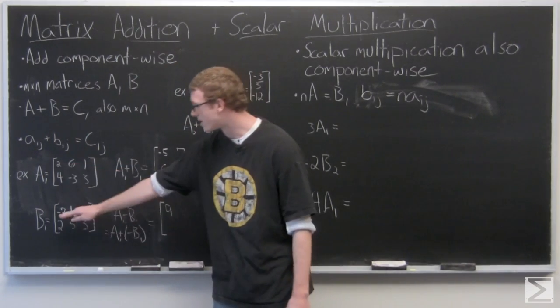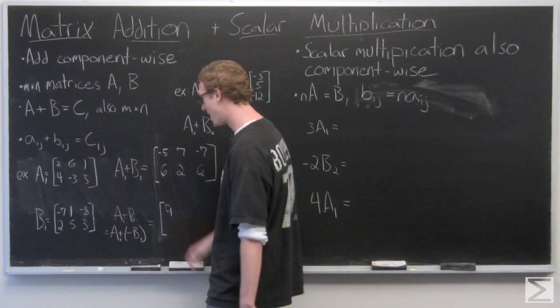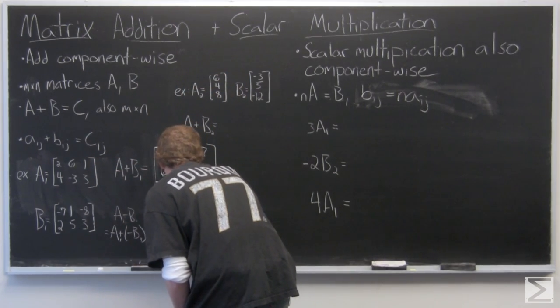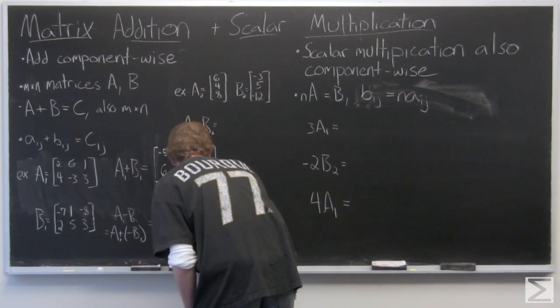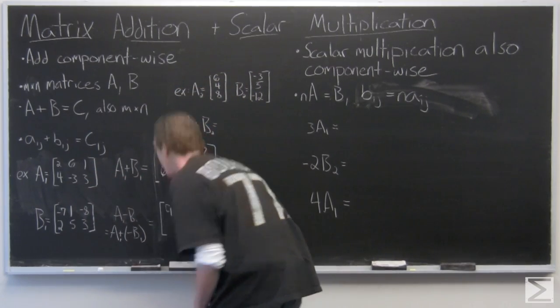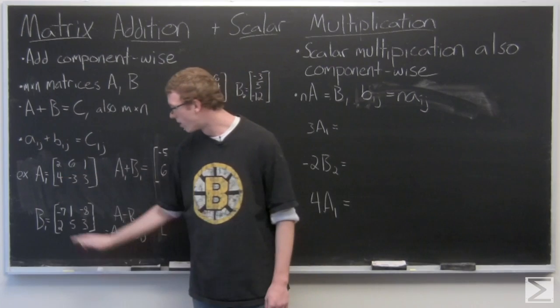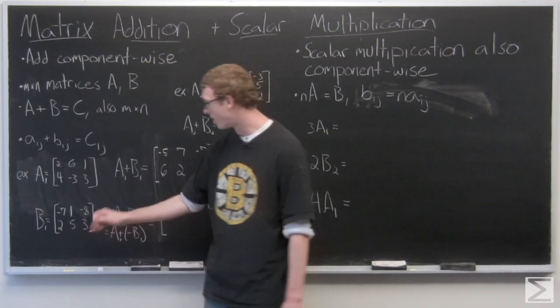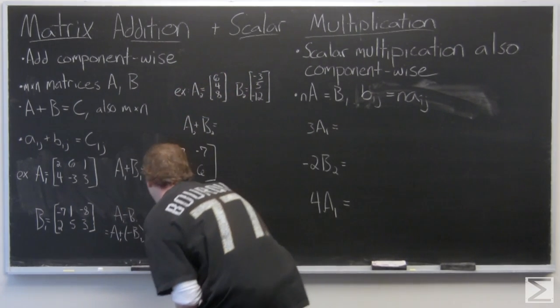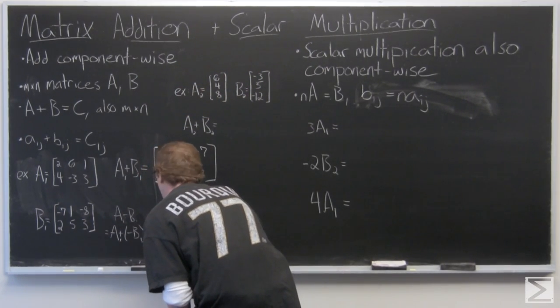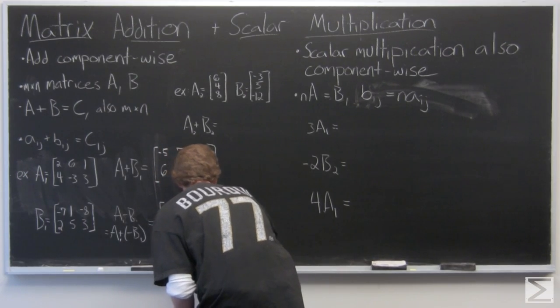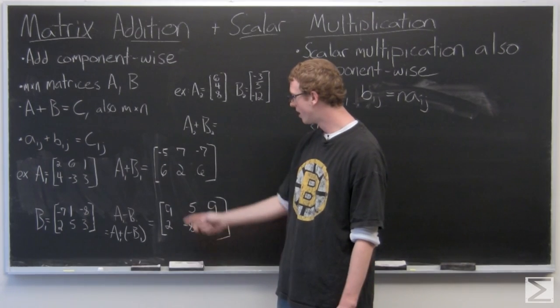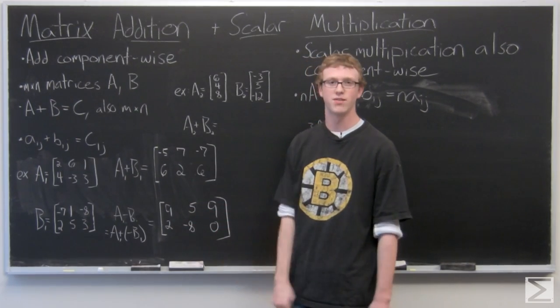So it's going to be 2 plus 7, so that's going to be 9, 6 minus 1, 1 plus 8, and then 4 minus 2, negative 3 minus 5, and 3 minus 3. And the resultant matrix A1 plus negative B1: 9, 5, 9, 2, negative 8, 0.